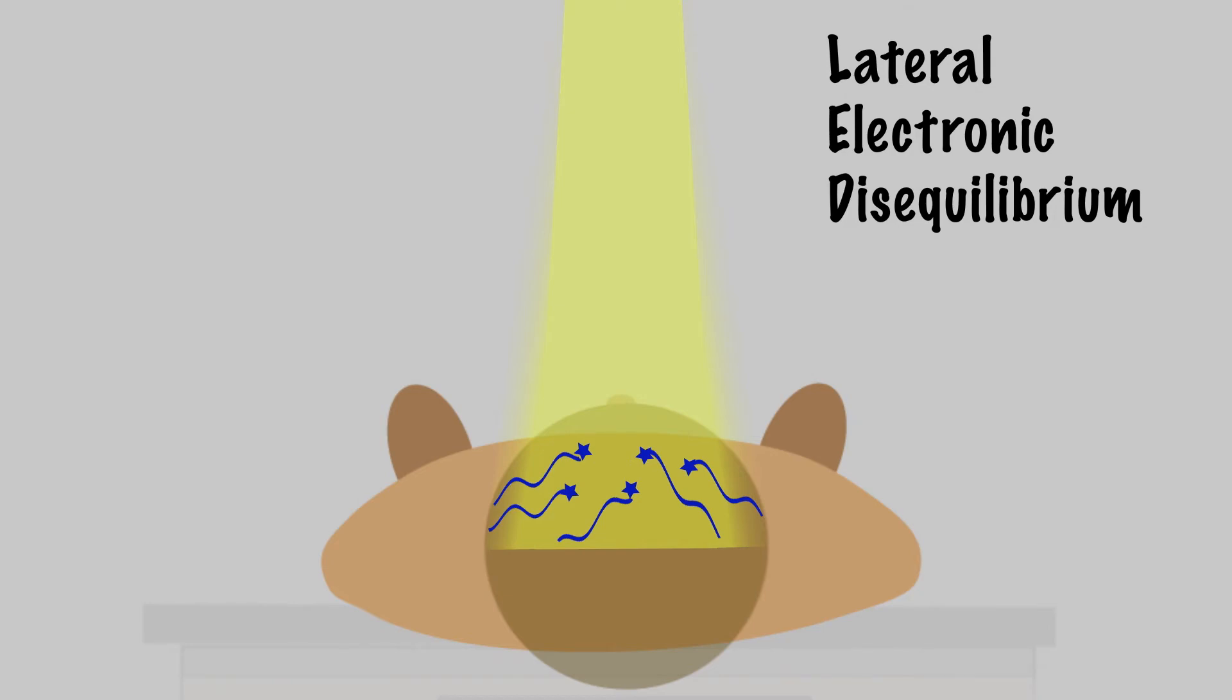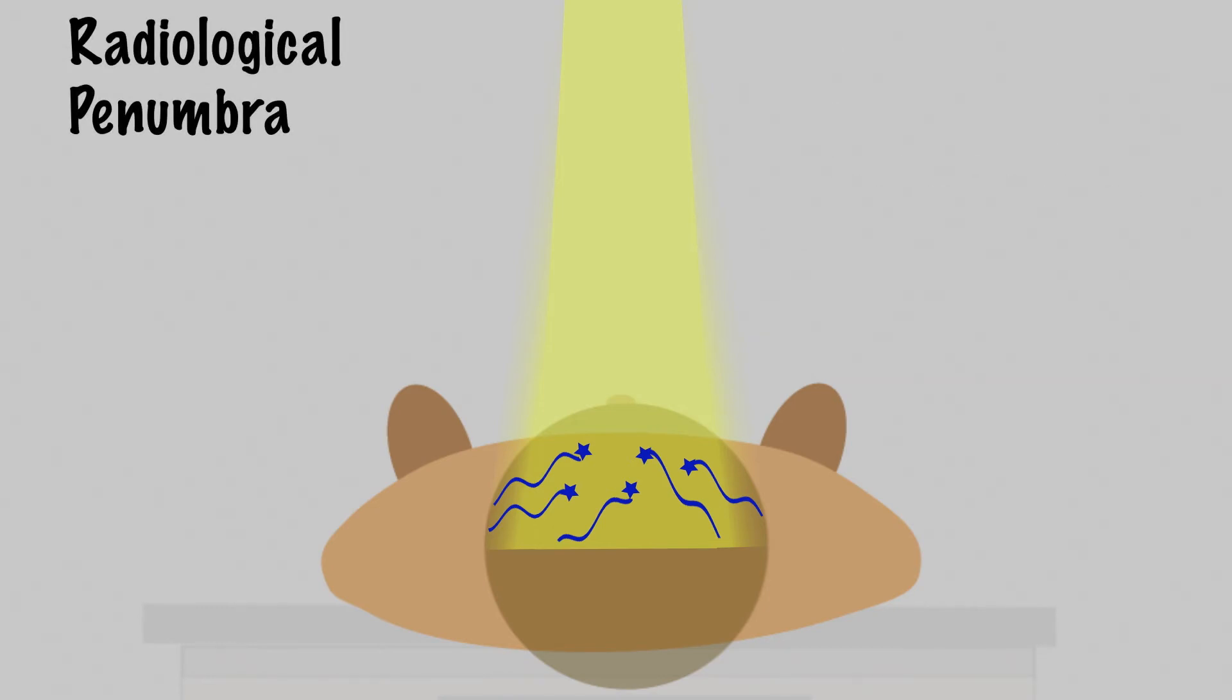Electrons generated in the beam will scatter outside the field, but there is disequilibrium because there is no scatter coming from the other direction. So that ends up reducing the dose inside the field near the edge and raising the dose in the outside region. That creates another penumbra falloff that is called the radiological penumbra, or scatter penumbra, because it's created from the radiological effect of electrons moving from the place that they're created and depositing dose elsewhere.